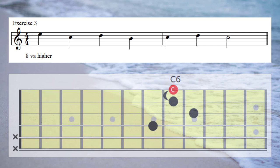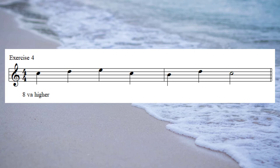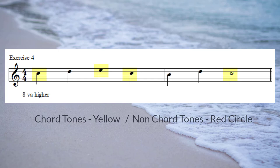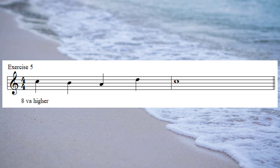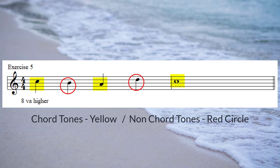Now for example number four. The notes are C, D, E, C, B, D, C. Once again we've marked in the chord tones and the non-chord tones. And now for example number five — the notes are C, B, A, D, C.